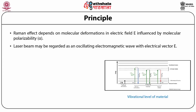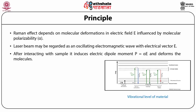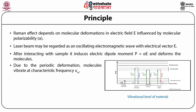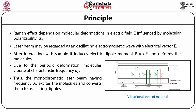The Raman effect depends on molecular deformations in electric field E, influenced by molecular polarizability alpha. A laser beam may be regarded as an oscillating electromagnetic wave with electrical vector E. After interacting with the sample, it induces an electric dipole moment p, which is equal to alpha times E, and deforms the molecules. Due to the periodic deformation, molecules vibrate at characteristic frequency nu m, and the monochromatic laser beam having frequency nu not excites the molecules.